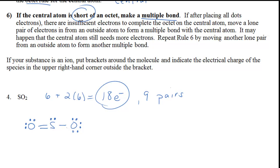Now you might be thinking: why didn't you take the lone pair from the oxygen on the right? It turns out you could do that, and you could come up with another Lewis structure where we put the double bond on the right and the single bond on the left. Which one's right? Actually, neither by itself. Yes, we've satisfied the rules for drawing a Lewis structure and all the octets are satisfied, but the real structure of the molecule is an average of these two. We show that they are averaged by putting a double-headed arrow between those two structures, and these two structures are called resonance structures.